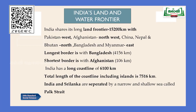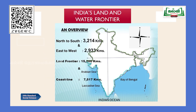Students, the answer to 'what separates India and Sri Lanka' is Palk Strait. Looking at this map showing India's land and water frontier: the north to south extension is 3,214 kilometers, the east to west extension is 2,933 kilometers, the total land frontier is about 15,200 kilometers, and the coastline including all islands is about 7,517 kilometers.